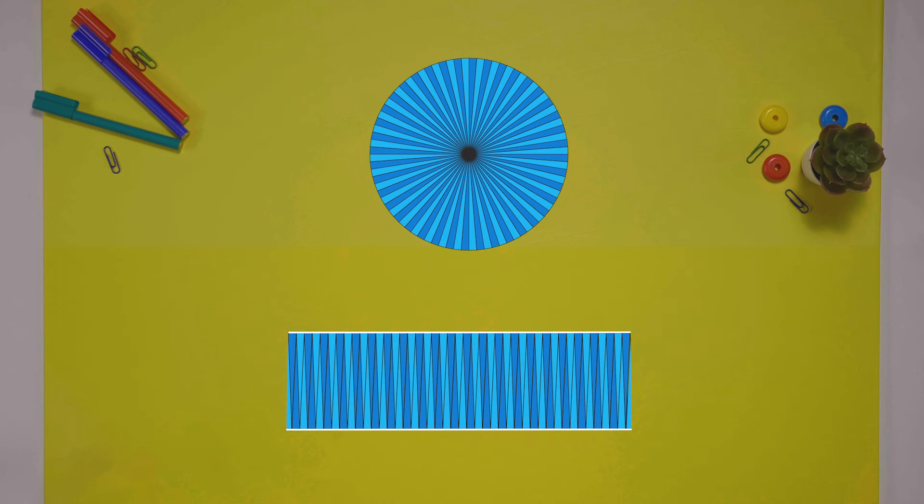Its area still equals that of the circle. Just like before, this side is equal to the circle's radius. What about this side?